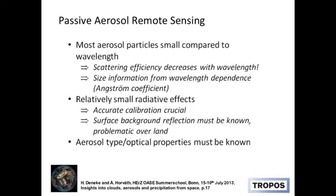Now a few things on aerosol remote sensing from a passive perspective — I've already touched on the active perspective with CloudSat/CALIPSO. Most aerosol particles are relatively small compared to the wavelength. The scattering efficiency decreases with wavelength — if you know about the blue color of the sky, you understand why: we're in the Rayleigh regime, and the smaller the particle gets, the less efficiently it scatters. You can use this effect to get size information, formalized through the Angström exponent.